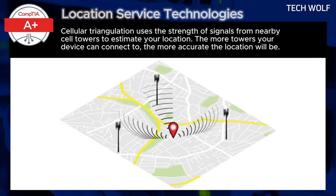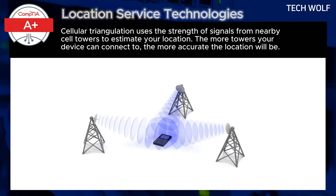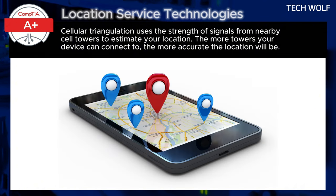The more towers your device can connect to, the more accurate the location will be. Location services are often necessary for apps to function correctly. For example, a weather app needs your location to provide accurate forecasts.